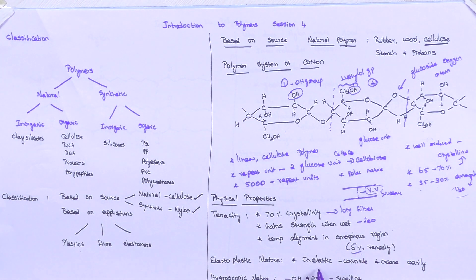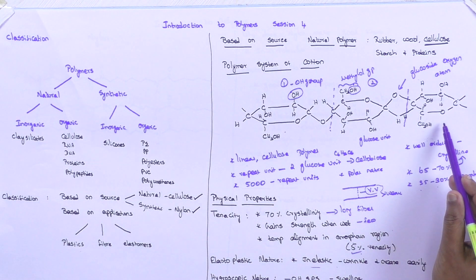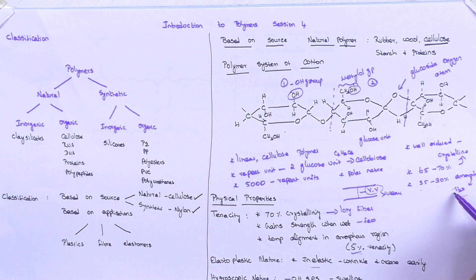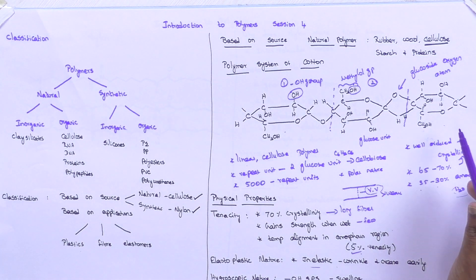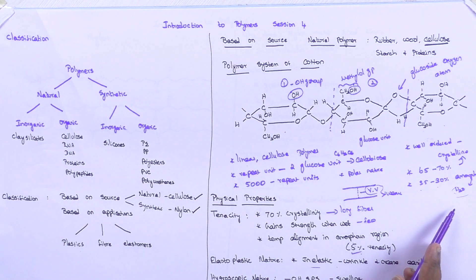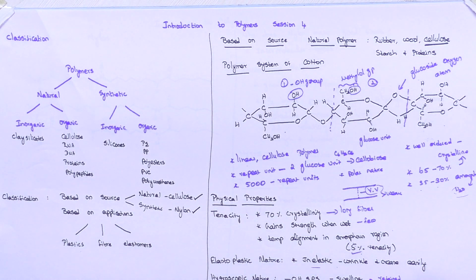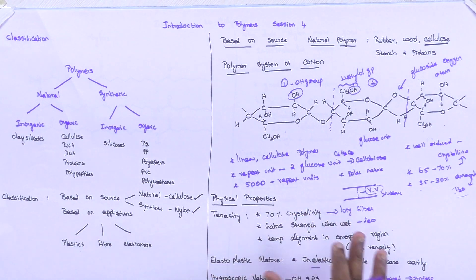Regarding elastoplastic nature, cotton is mostly inelastic — it wrinkles and creases easily. Even though hydrogen bonding is present, the amorphous region is significant, so the wrinkle cannot be restored even after hydrogen bonding is reformed. Regarding hygroscopic nature, water enters inside the amorphous region, causing swelling, and water is retained for a long time compared to other synthetic fibers.